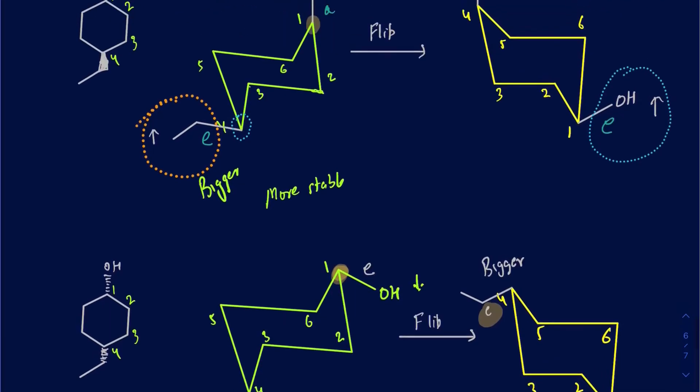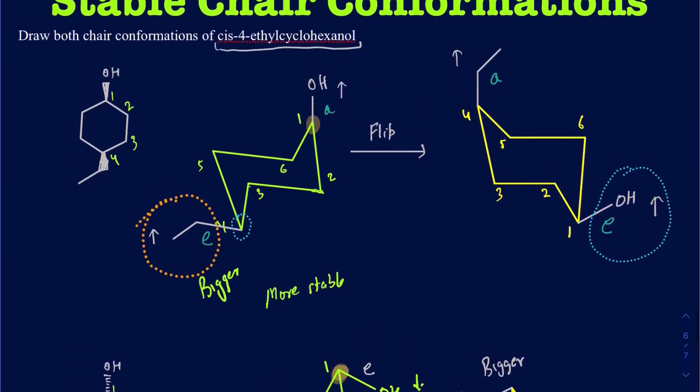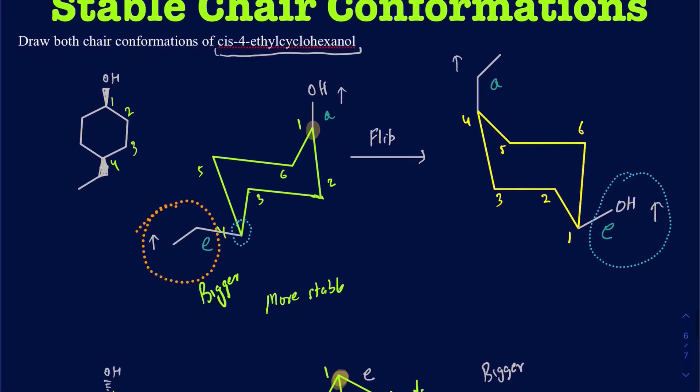So the stability conclusion doesn't really change — in both sets, the conformation with the ethyl group on the equatorial is more stable. The only thing that changes is how they're pointed. This is how you draw chair conformations and figure out which one is more stable. If you have any questions, feel free to leave comments in the section below.